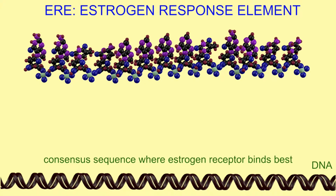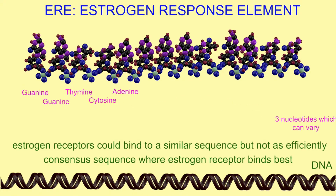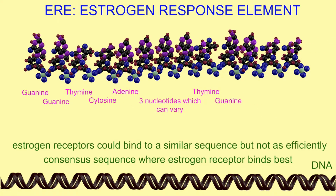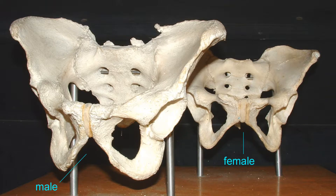Estrogen not only affects the tissues of the reproductive system, but also those of the skeletal system, affecting osteoporosis and the shape of the pelvic bones.